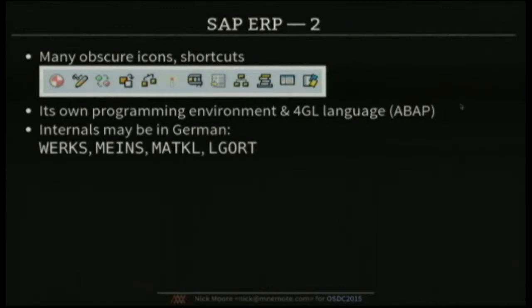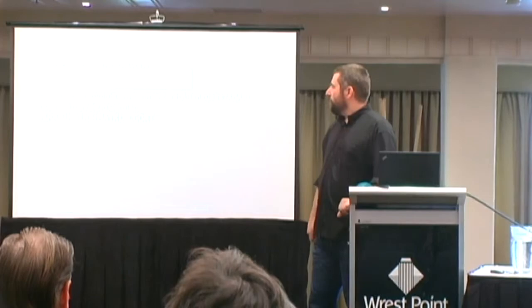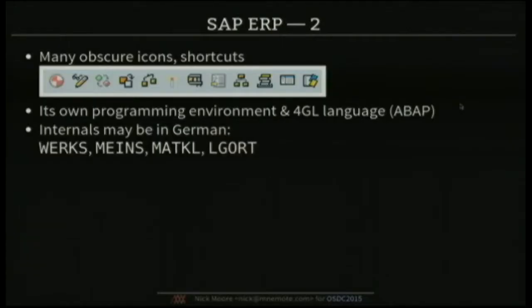We should have had a competition to name the icons from that little strip — there are things there I don't quite know what they're meant to be. It has its own whole programming environment, which is completely alien to every other programming environment that has existed anywhere ever. Many of the internal names are in German or abbreviations in German — so you have things like 'verks' and 'means' for material class and so on. All the identifiers are five letters long and in capital letters because that's how you fit them into a 30-bit identifier.